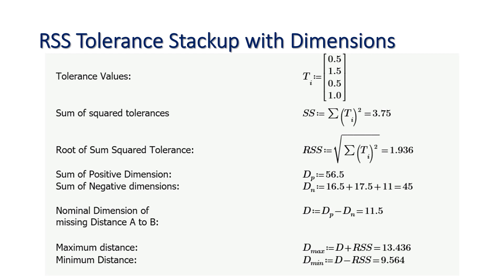The squared tolerances are: 0.5 squared is 0.25, 1.5 squared is 2.25, 0.5 again is 0.25, and 1 is equal to 1. If you sum all these squared tolerances you will get 3.75.